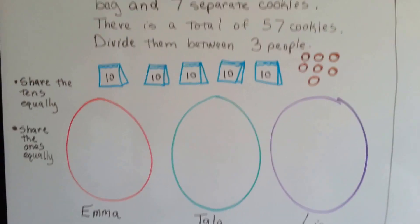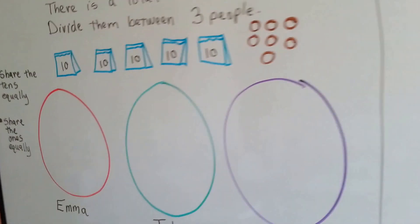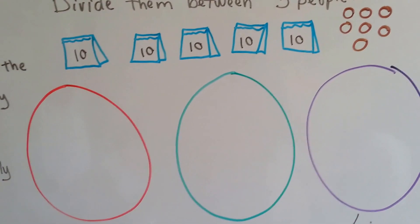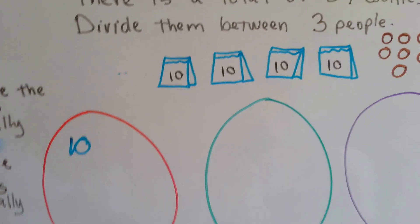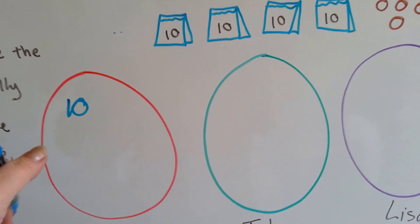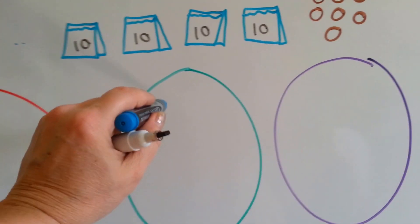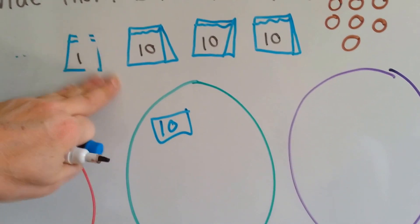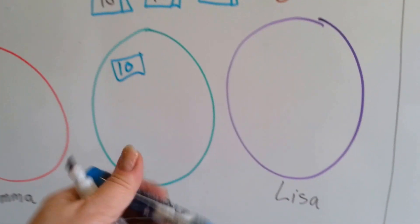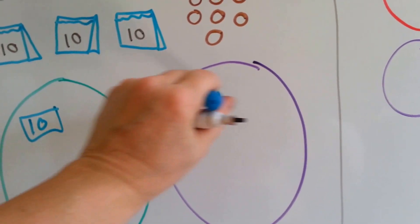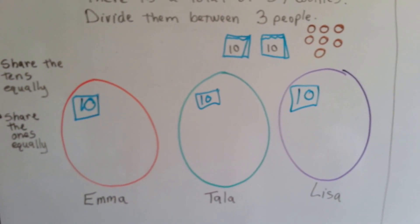The first thing we're going to do is give each of them a bag of ten. So Emma will get ten — this one here. Now let's give Tala a bag of ten — that's this one. And now we need to give Lisa a bag of ten — that'll be this one. But can we give them each another bag of ten? No, we can't.